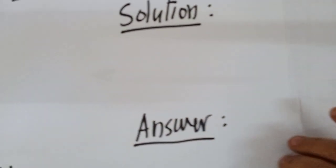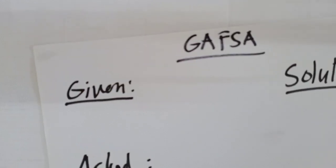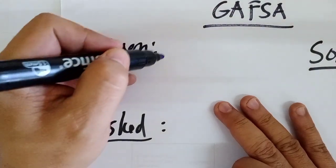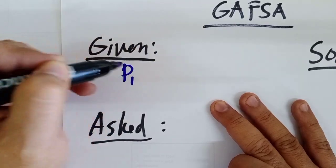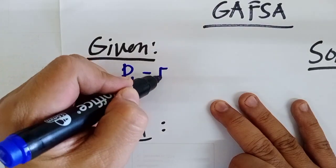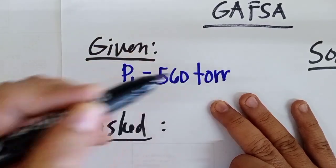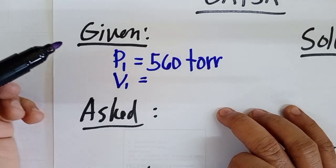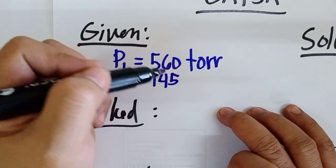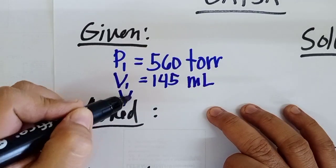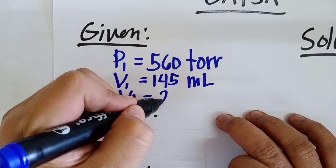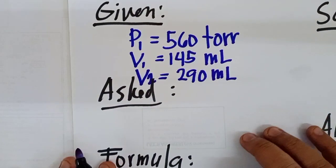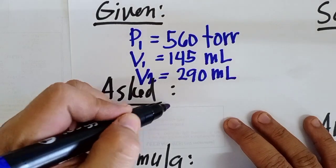Let us solve the problem using the GAFSA method. First, let us plot the given. We have P1 equal to 560 torr, V1 is 145 ml, and V2 is 290 ml. The unknown of the problem — the one we are going to solve — is P2.